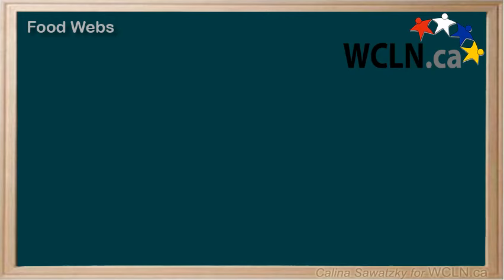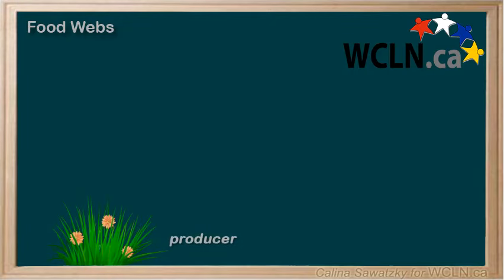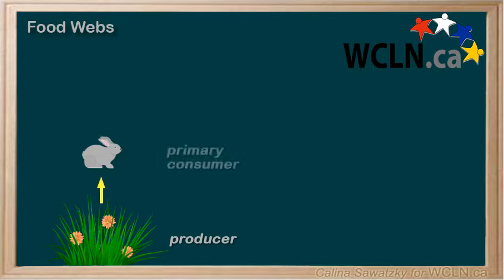At this point, you know how to make food chains. For example, let's start with a producer — a plant. In this case, grass. Rabbits love fresh grass. They need lots of it for energy to bounce around so much. In this case, the rabbit is the primary, or first, consumer.